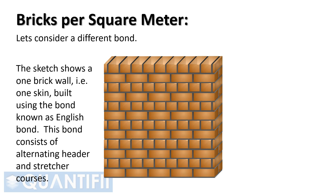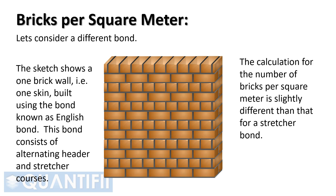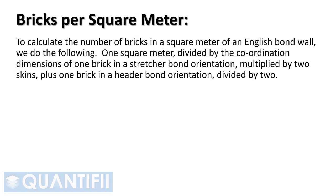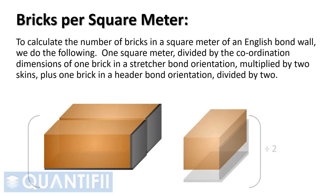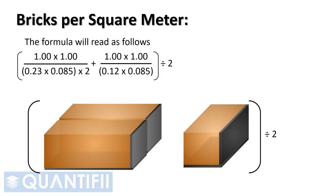Let's consider a different bond. English bond is a one brick wall built using alternating header and stretcher courses. The calculation for bricks per square meter is: {[1 ÷ (0.23 × 0.085)] × 2 skins + [1 ÷ (0.12 × 0.085)]} ÷ 2 = 100.17 bricks, which we can round up to 101 bricks per square meter.